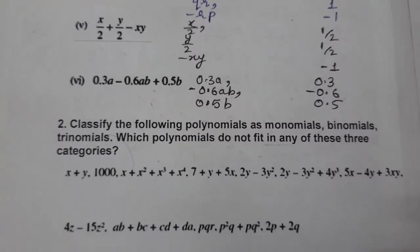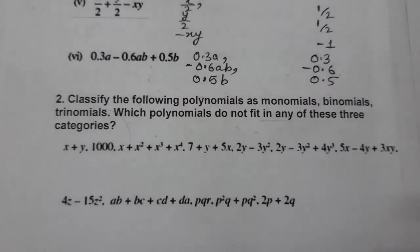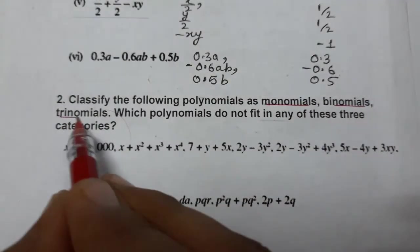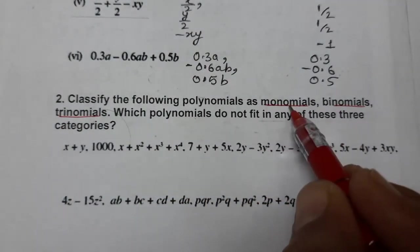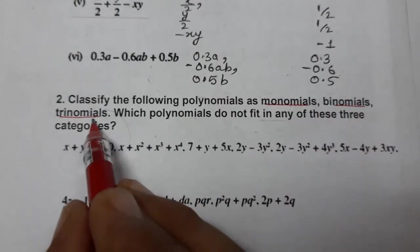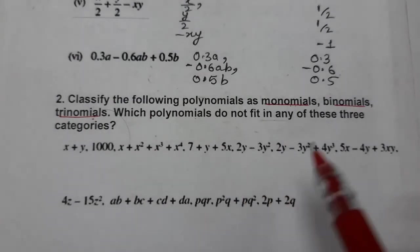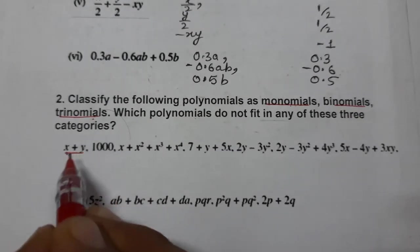Now what is question number 2? Classify the following polynomials as monomial, binomial, or trinomial. Which polynomials do not fit in any of these categories? So let's start. First one, if we see carefully: x + y. This is having two terms. Terms are always separated by plus and minus signs.